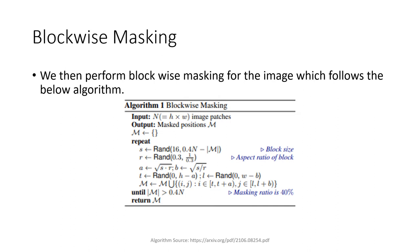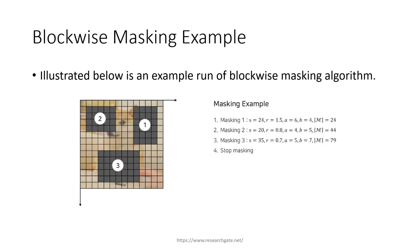Let us demonstrate with an example. Illustrated below is a run of the blockwise masking algorithm. In the first iteration, it instantiates the size to be 24 and the aspect ratio to be 1.5, which corresponds to a length of 6 and a breadth of 4, occupying 24 patches. This is a 14x14 patch grid, so a total of 196 patches, and we want to occupy at least 40%. In the first iteration, it masks 24 of those 196 patches.